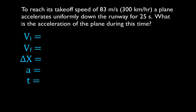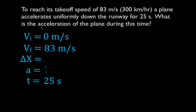Those are the initial velocity, the final velocity — Vf and Vi — then the change in position, the displacement delta x, and the acceleration and the time. Write down what you've been given and what you're trying to solve for. The plane reaches a takeoff speed of 83 meters per second. When planes accelerate, they start at rest, so the initial velocity is 0 meters per second. The final velocity is 83 meters per second, and that occurs over a time of 25 seconds. We're trying to find the acceleration, and we're not given or solving for the change in position. We've been given three variables and want to solve for the fourth.